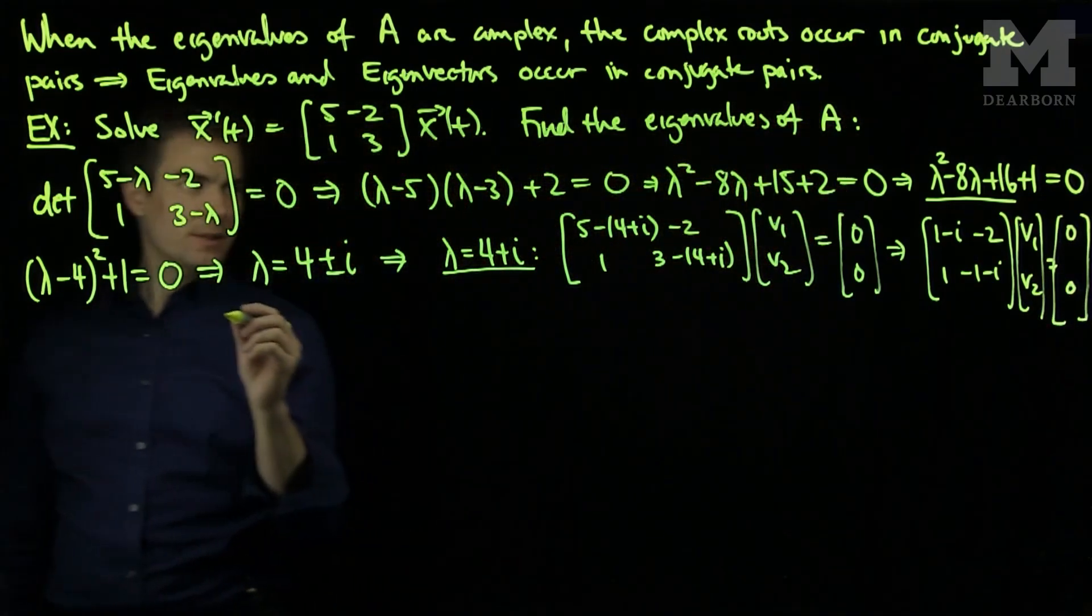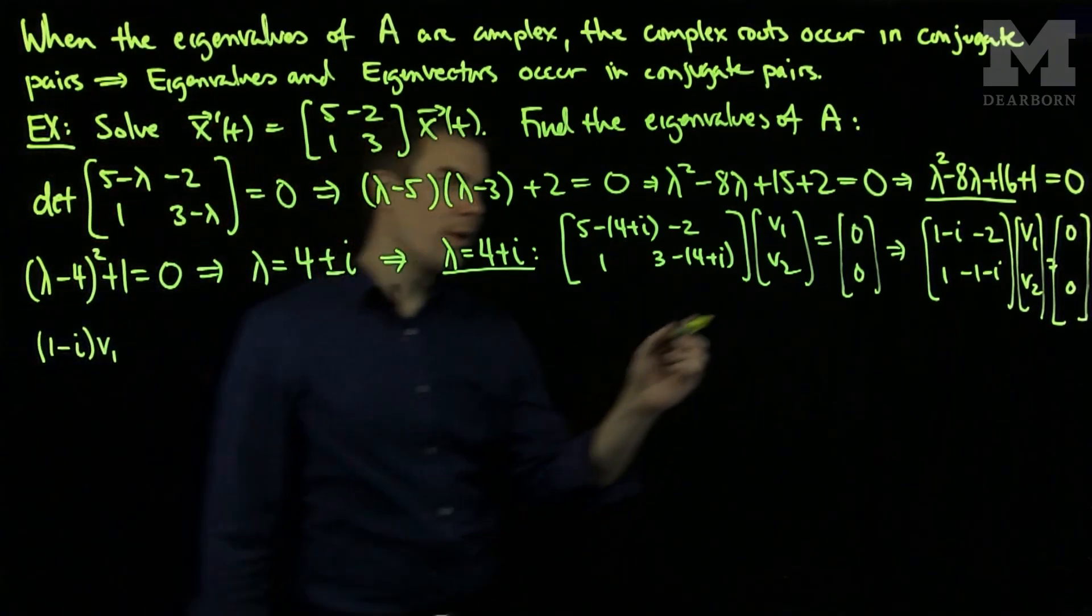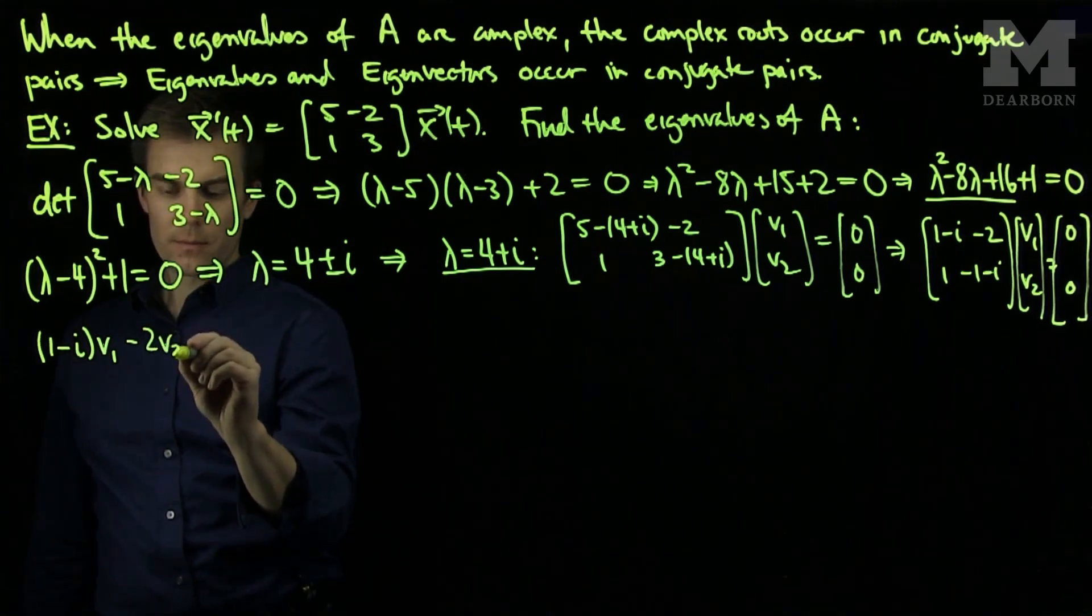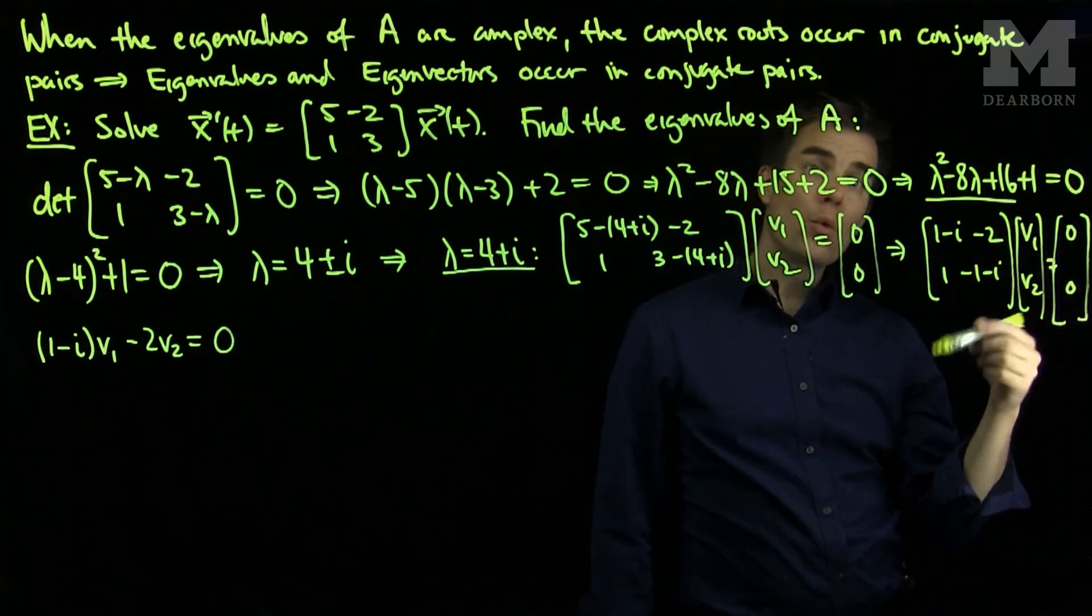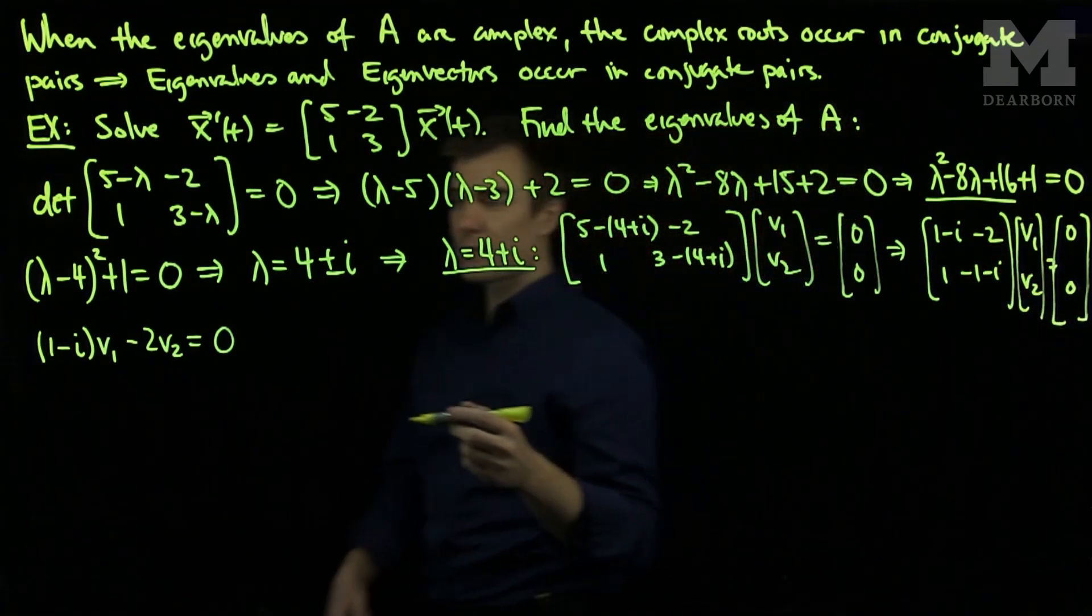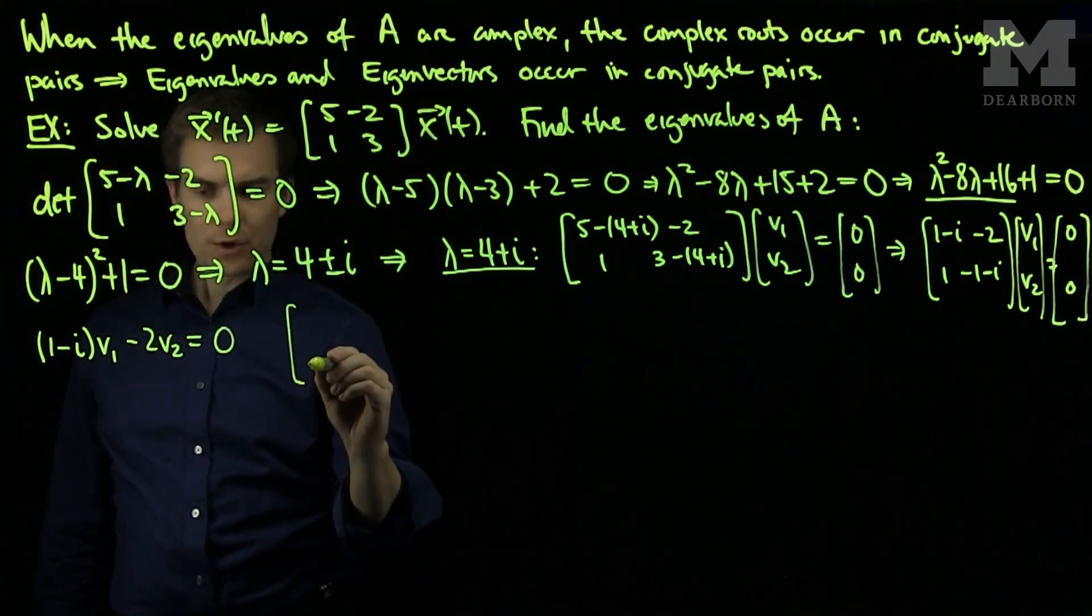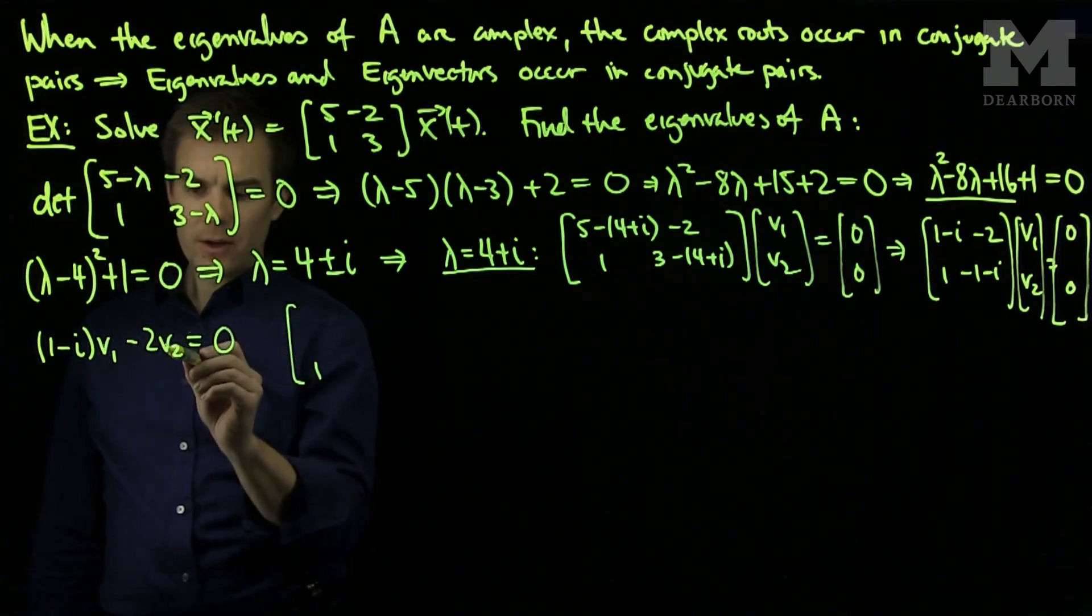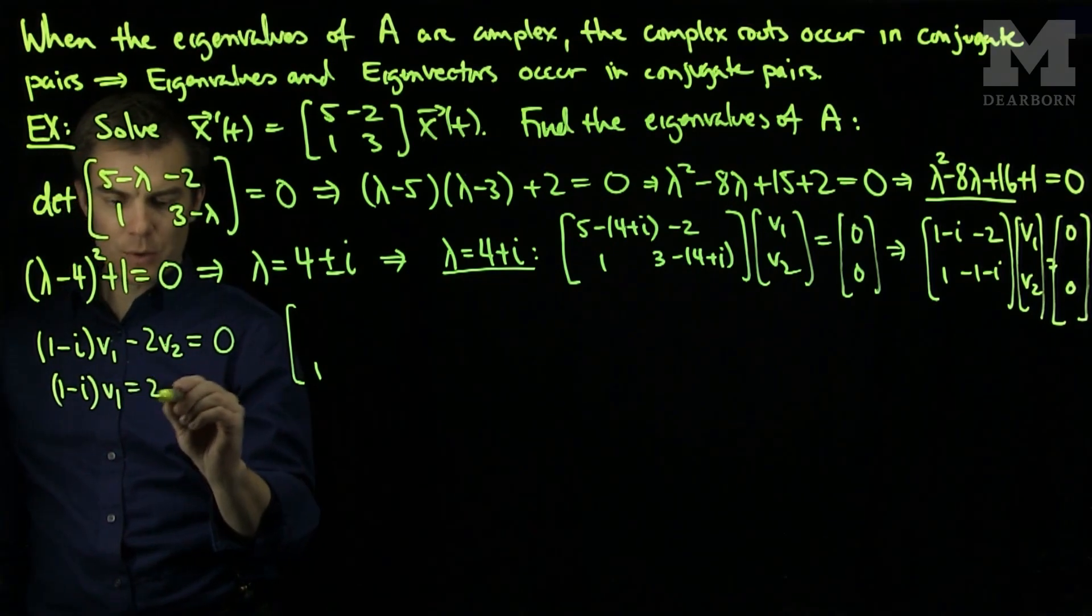Writing this as a system, I see that (1-i)v₁ - 2v₂ = 0. The other equation will be identical or dependent on the first one, so this is the only equation we need to satisfy. I can satisfy this by choosing v₂ = 1, and then v₁ will equal 2.